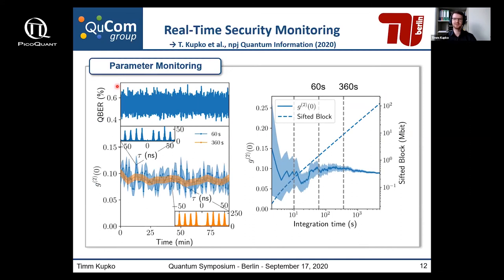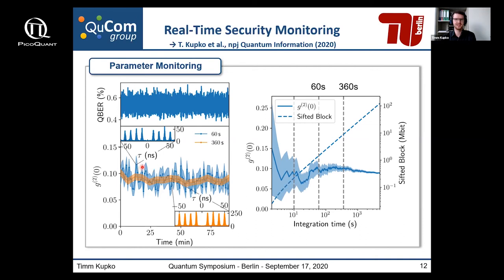Another important factor in real implementations is constant monitoring of the different security parameters. We performed a test measurement with a fixed input polarization over about 90 minutes. The quantum bit error ratio calculated from all timestamps showed a very stable setup, which is also reflected in the g²(0) value. We used accumulation times of 60 and 360 seconds to evaluate the g²(0) value over time.